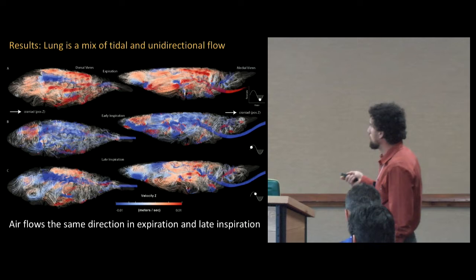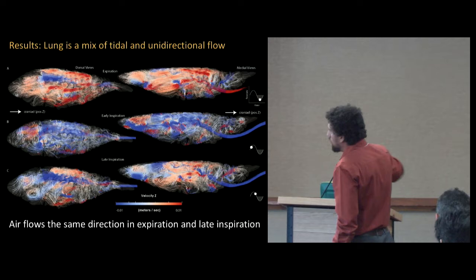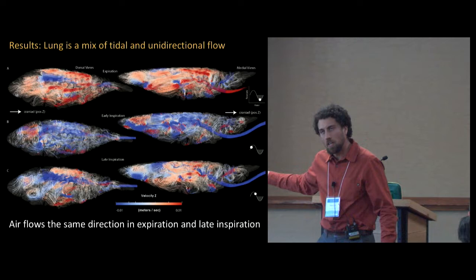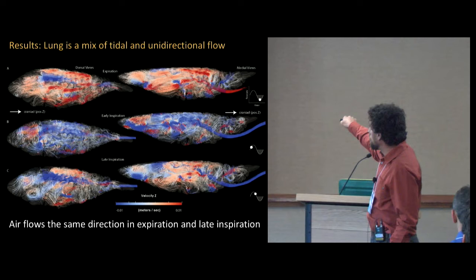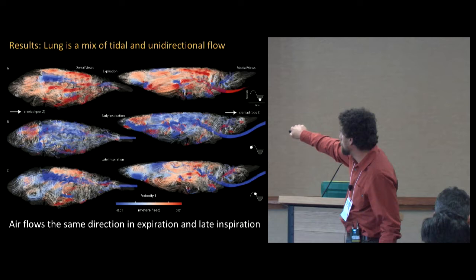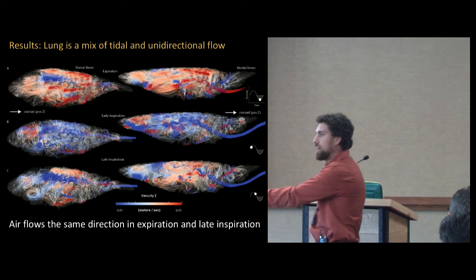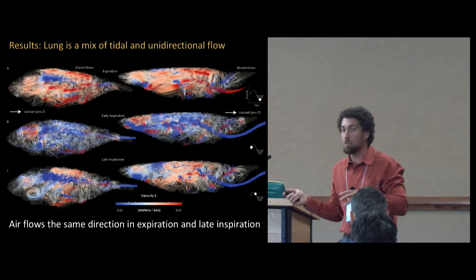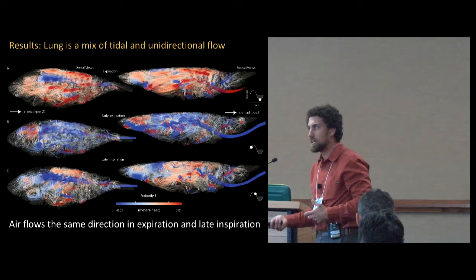To show you what that looks like on a real animal, that long tube here is primarily moving air to the back of the lung. And then the side chambers are primarily moving air forwards. A little bit of raw data streamlines. Here I've colored the streamlines where blue is air flow towards the left, towards the back of the lung, and red is flow towards the top. On expiration, the animal's breathing out. And this is early and then late inspiration. What's really interesting is expiration looks like late inspiration. Air flows in the same direction as expiration and late inspiration. So it's not a completely unidirectional lung. It's not a bird lung, but it's halfway there.